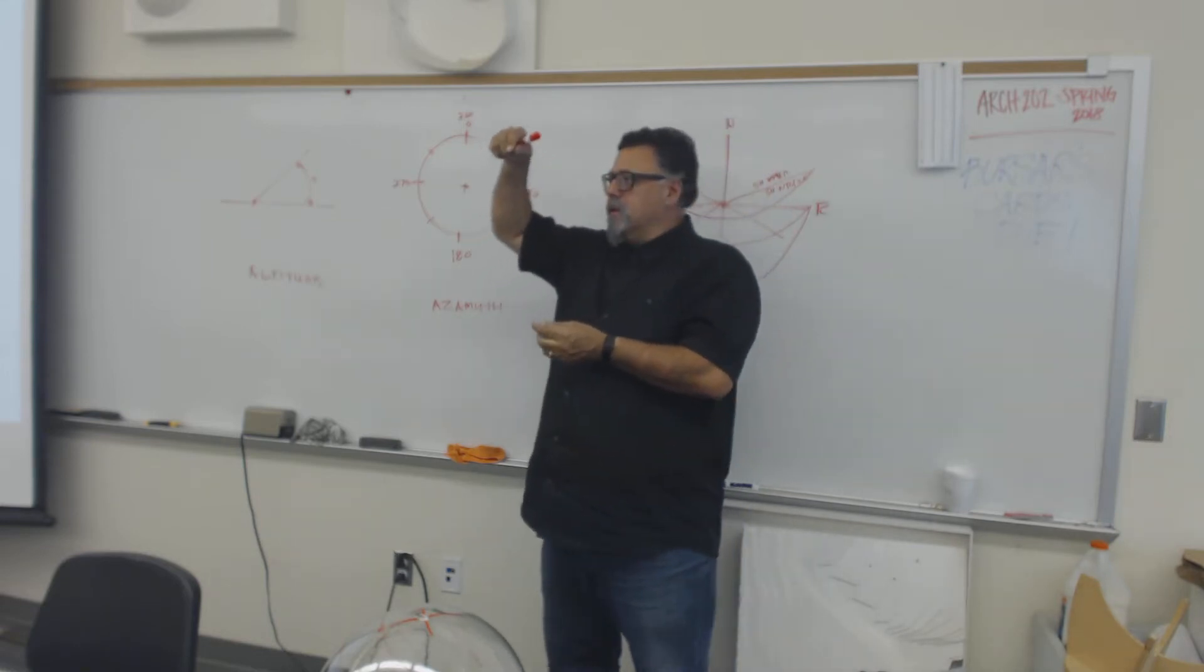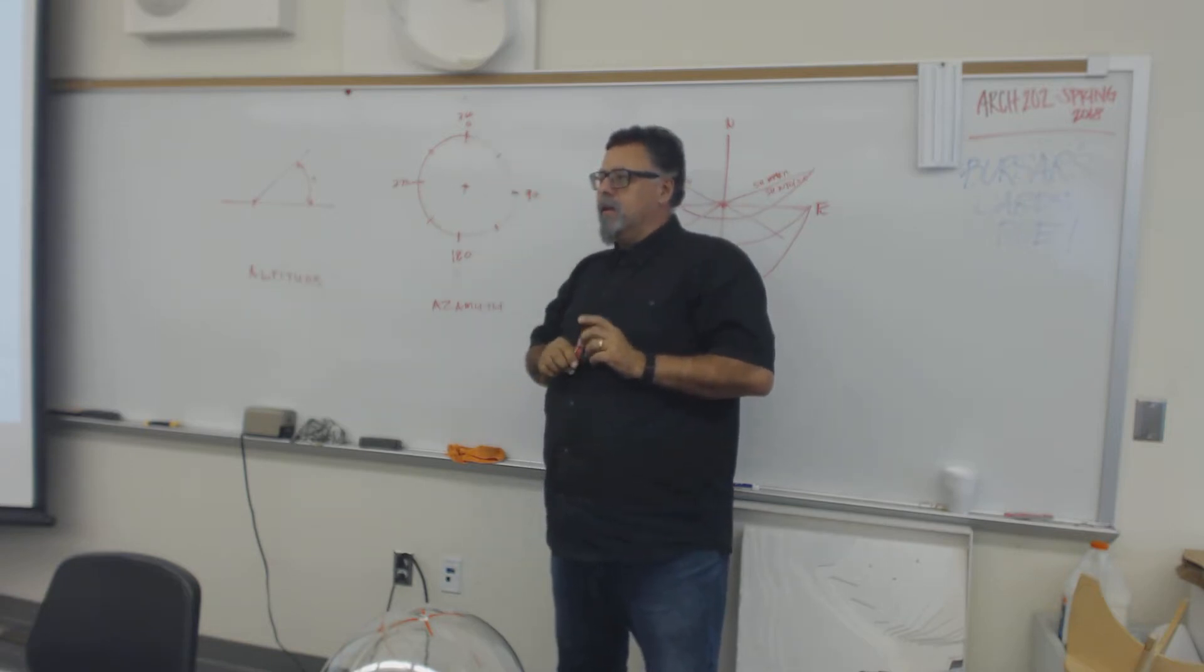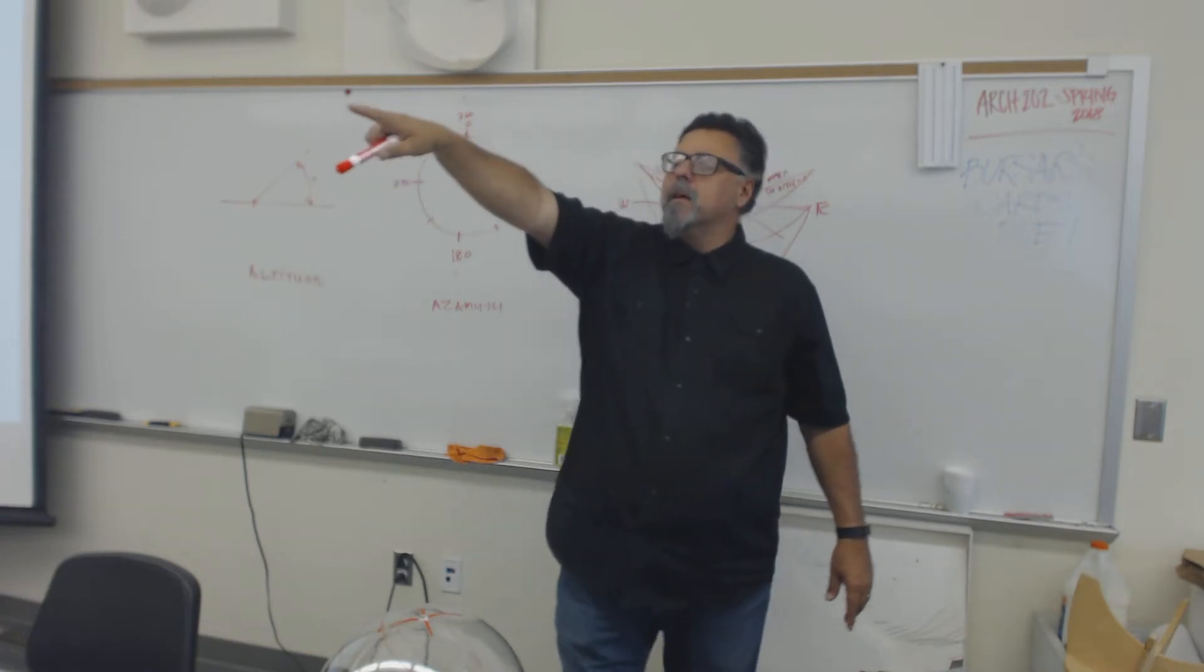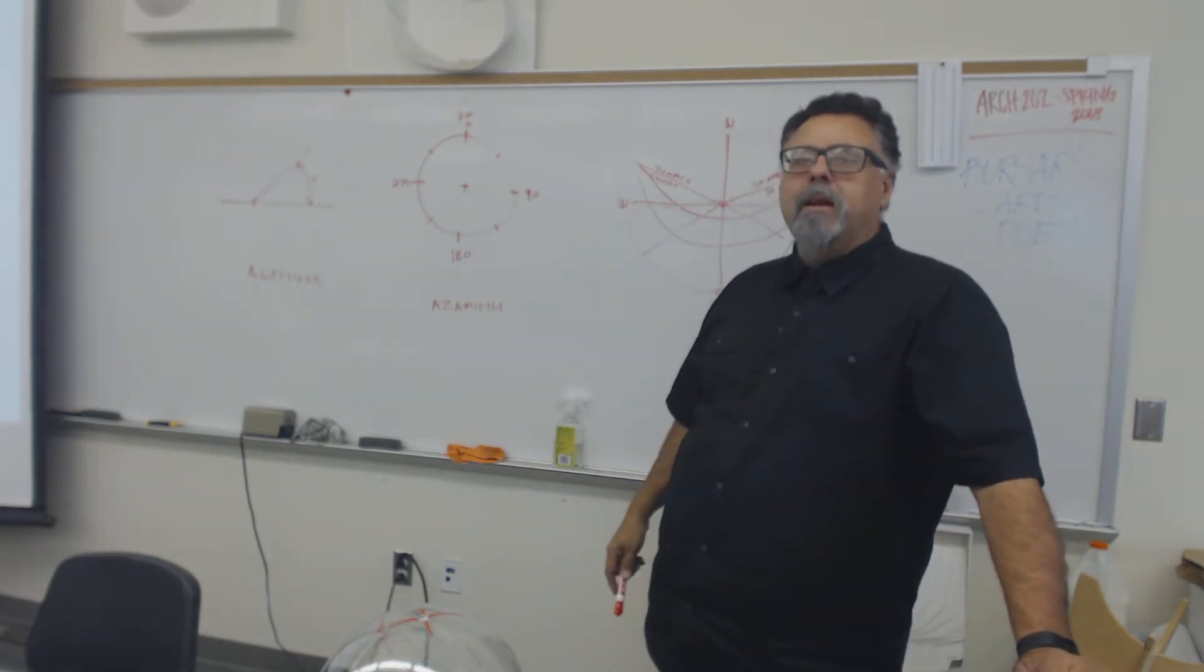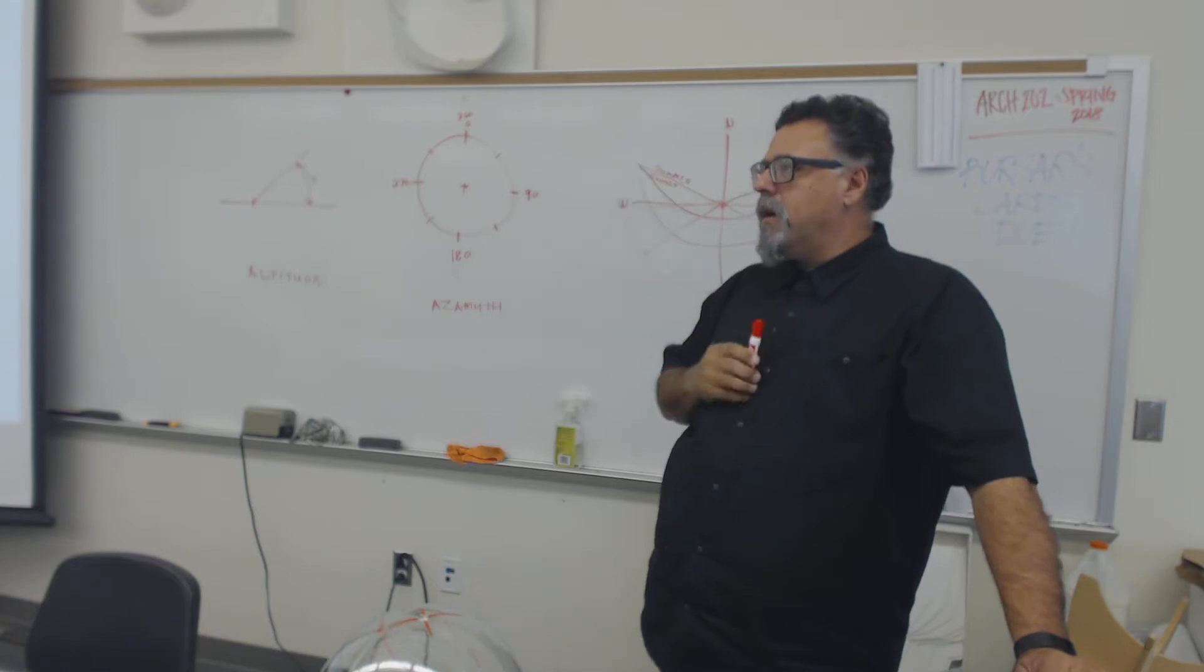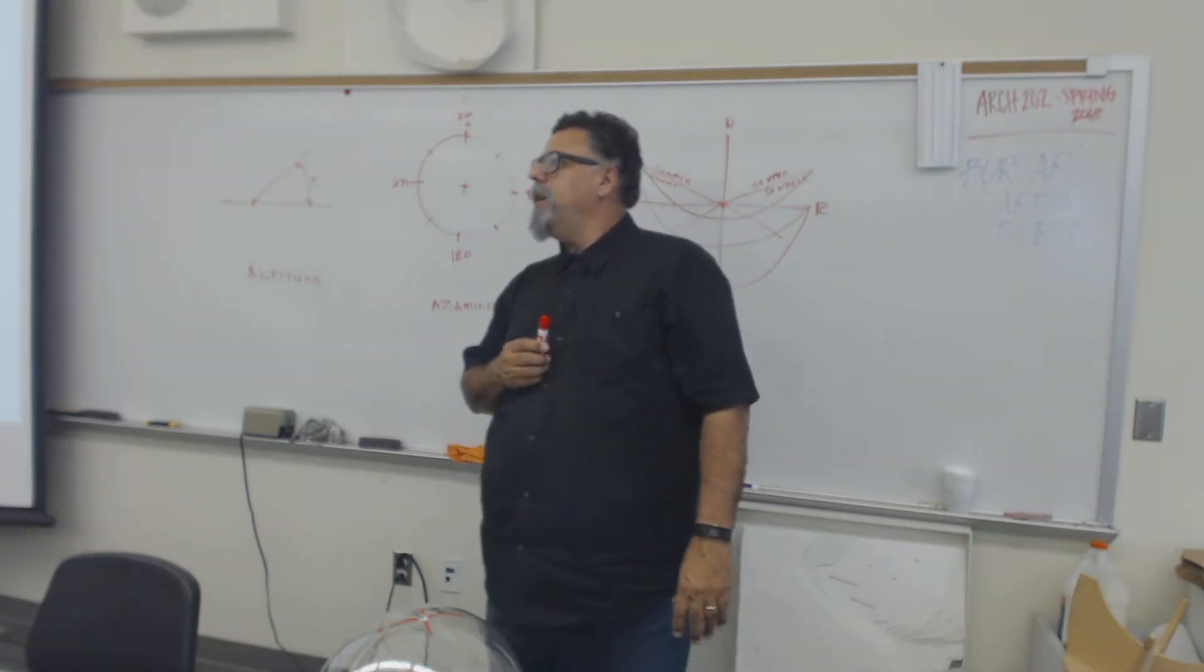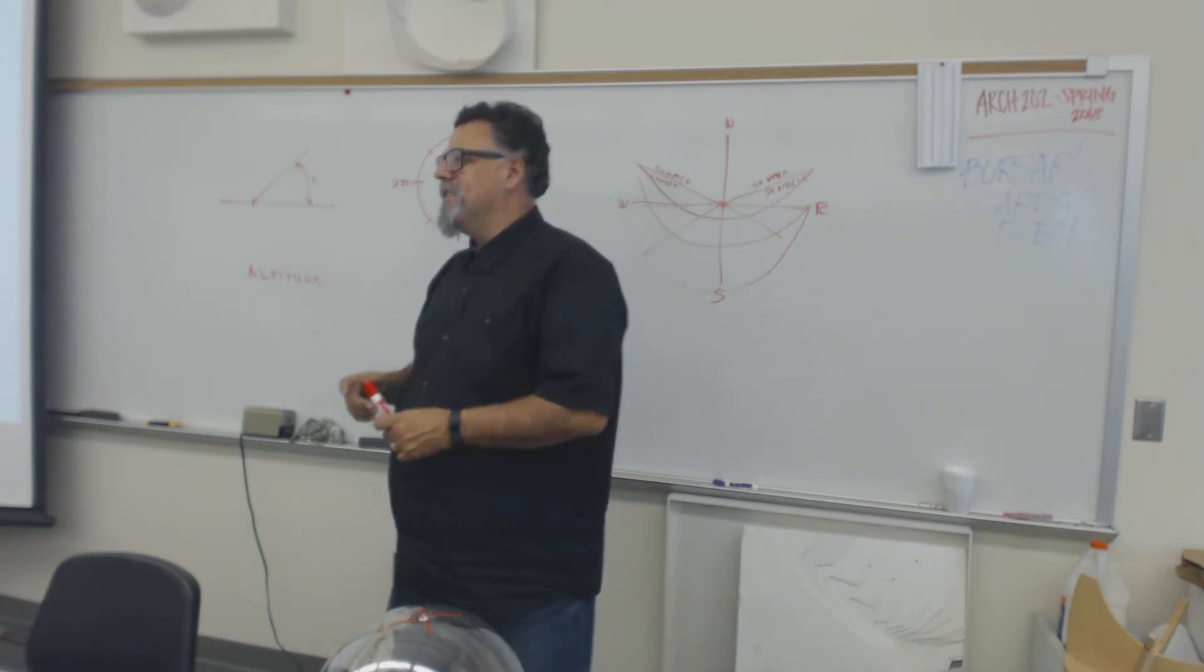And you guys have all seen globes. And have you guys noticed that the north pole doesn't point straight up? The north pole kind of angles down. Somebody grab me one of those globes inside the cupboard over there and bring it up here. Anybody know what the phrase is for why it tilts back? Remember back in grade school maybe? No. It's called the angle of declination.